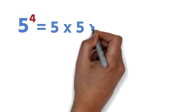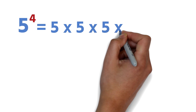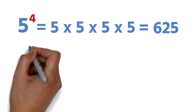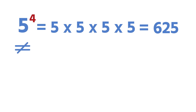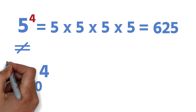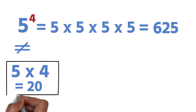5 exponent 4 is 5 times 5 times 5 times 5, which gives us 625. It is not 5 times 4, which is simply 20. I cannot count the number of times I've seen students get this part wrong, so please take note of it if you're not already familiar with it.